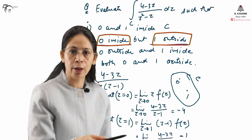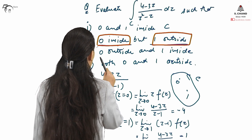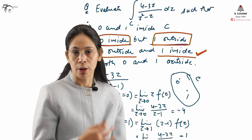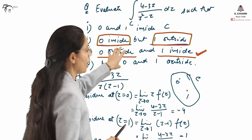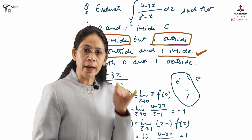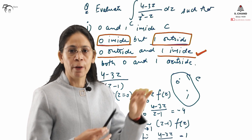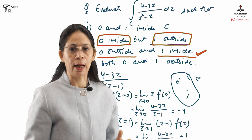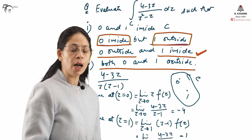The value of the integral is then 2πi times the residue at z = 0 only. For Case 3, when z = 0 is outside but z = 1 is inside C: z = 1 is the singularity inside C, so we find the residue at z = 1 only. The residue at z = 0 is not counted because that singularity lies outside C and therefore cannot be included in the calculation.